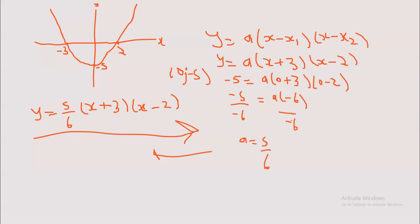Since we know our algebra, we can always go from this third format — remember this is the third format — to the first format which has a, b and c. To do that we do basic algebra. The 5/6 we leave outside, and then we open a bigger bracket. To simplify, we take this x and multiply with this x first: x times x will be x squared. Then this x multiplies the negative 2: x times negative 2 gives us negative 2x. Then 3 multiplies the x, giving us positive 3x.